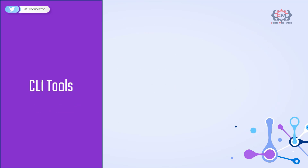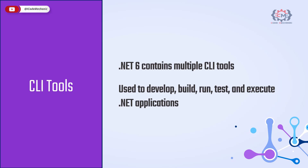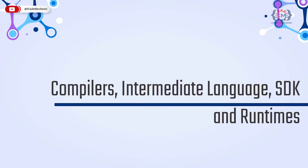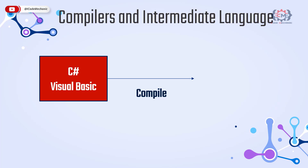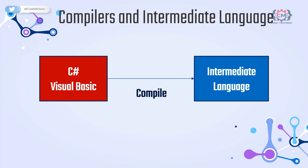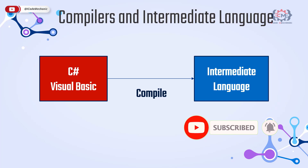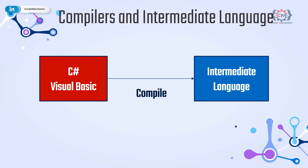Additionally, .NET contains multiple command line interface tools — the CLI — so that you can develop, build, run, test and execute .NET applications. One of the main advantages of .NET is that it is cross-platform. .NET languages like C# or Visual Basic compile code to a hardware-agnostic instruction set called Intermediate Language or IL — they are called managed languages, meaning execution is managed by a runtime. This has been the case since the release of the .NET Framework in 2002, but now .NET takes this to a whole new level.